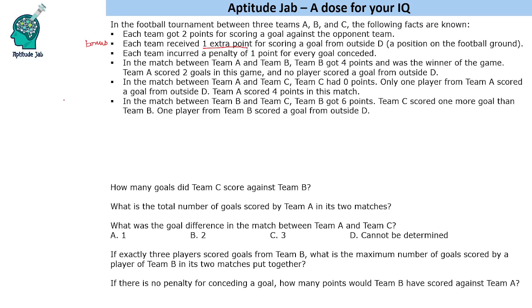For example, if a team scores three goals, they get three times two — six points. Suppose there is one bonus goal, that adds one more. And if five goals were conceded, they lose five points. So the calculation is: six plus one minus five — that is the final score of the team. This is how you calculate the points.